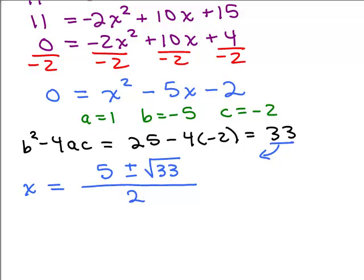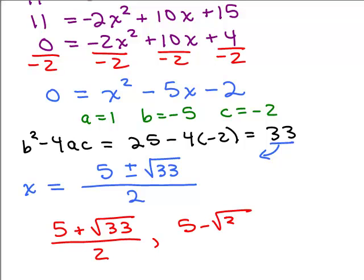And so those are my solutions. I have 2 of them, 5 plus the square root of 33 over 2, and 5 minus the square root of 33 over 2.